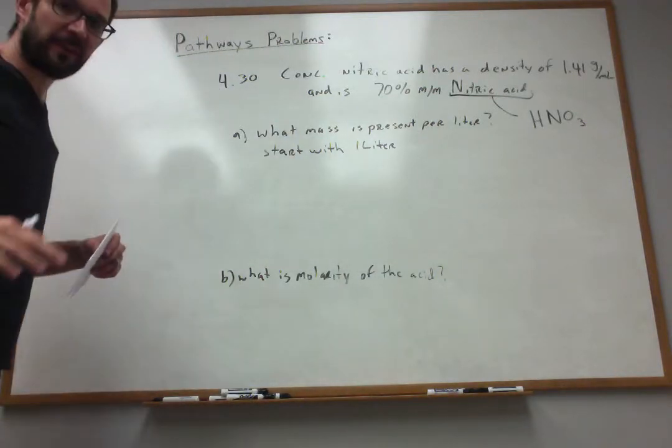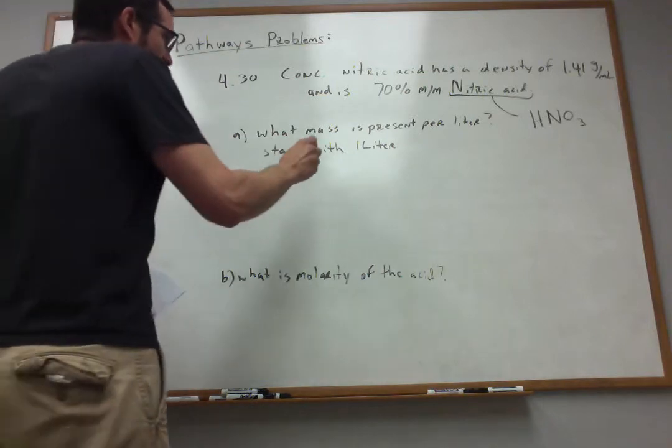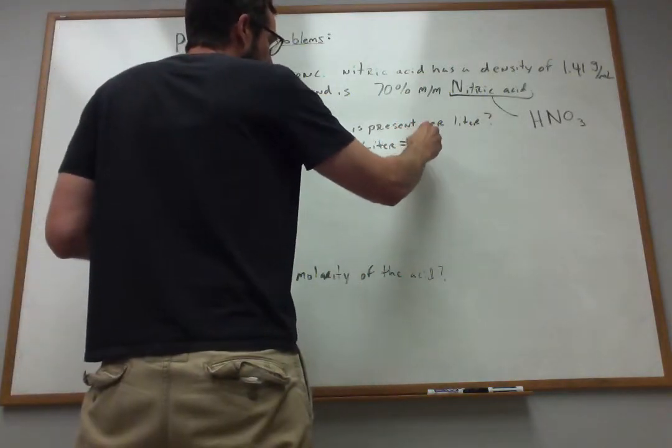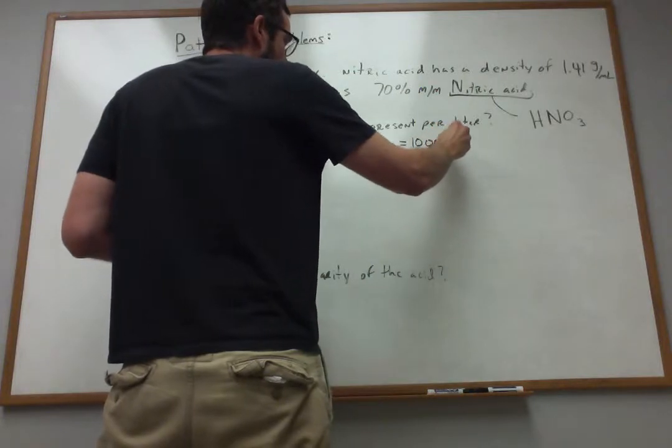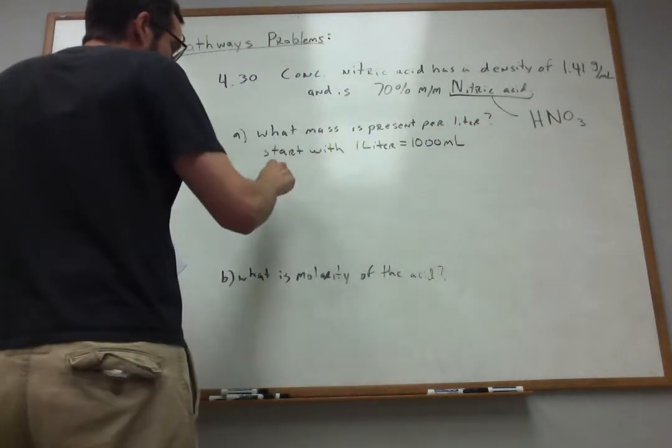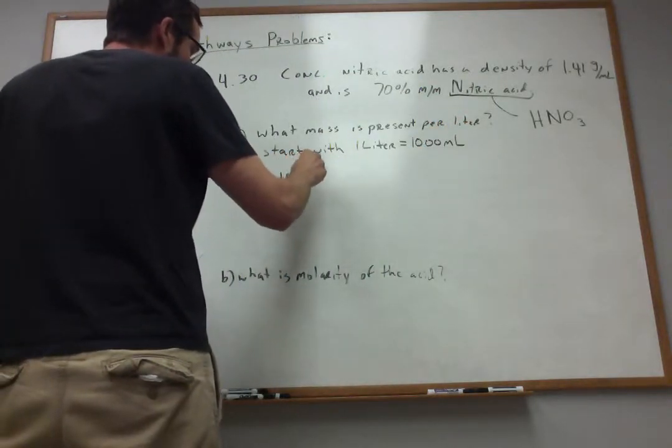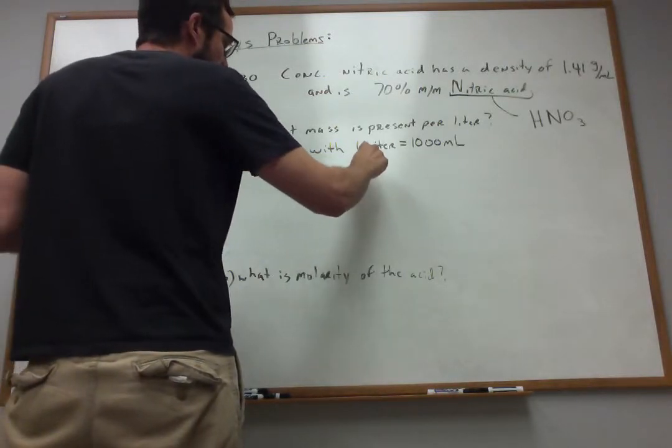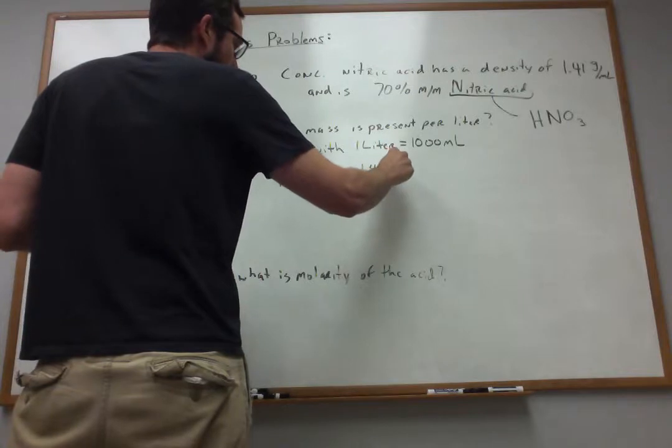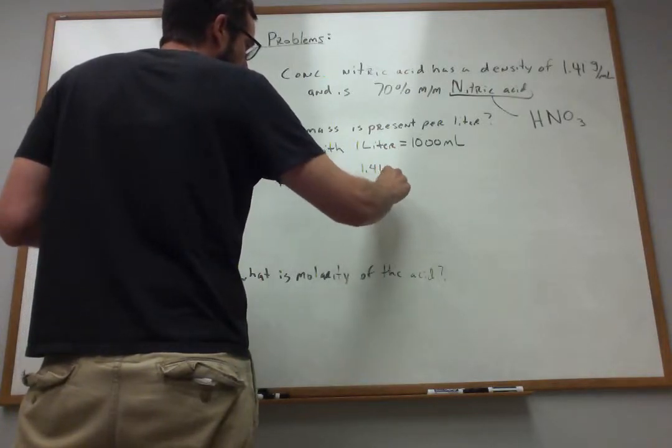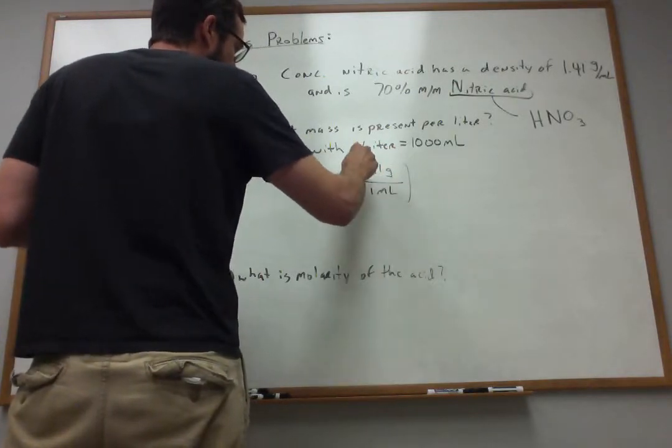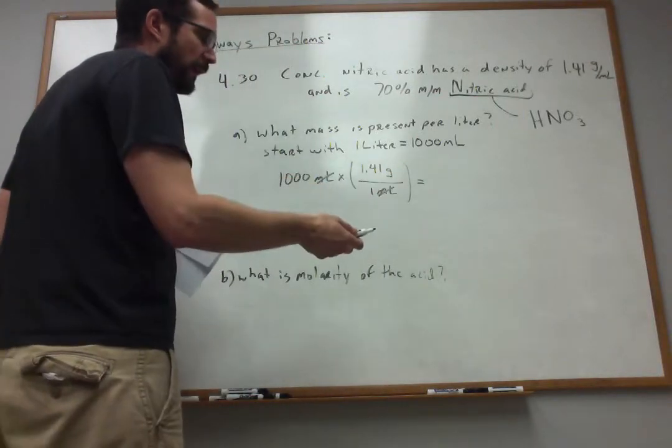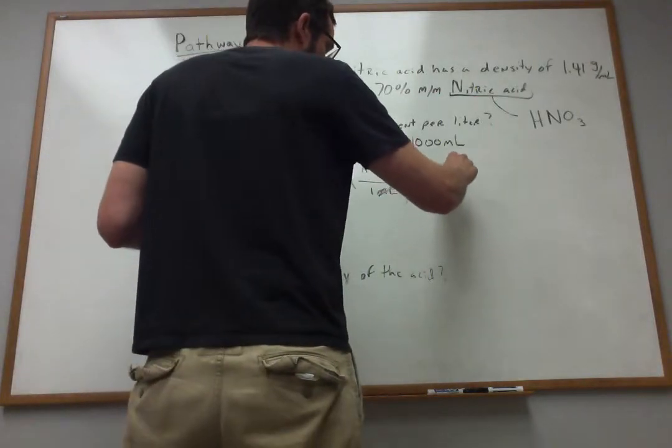What would be the mass, the total mass, of that one liter? Well, I know a liter is equal to a thousand milliliters. So if I start with a thousand milliliters, I think I can use my density, 1.41 grams per every milliliter as a conversion factor, to figure out how many grams this stuff weighs.